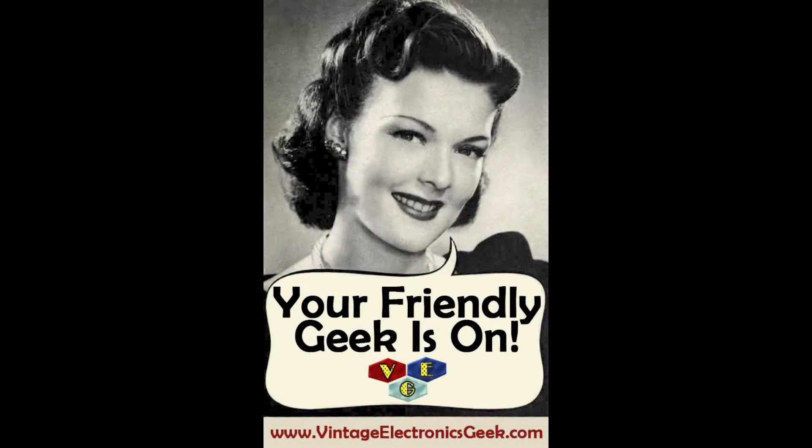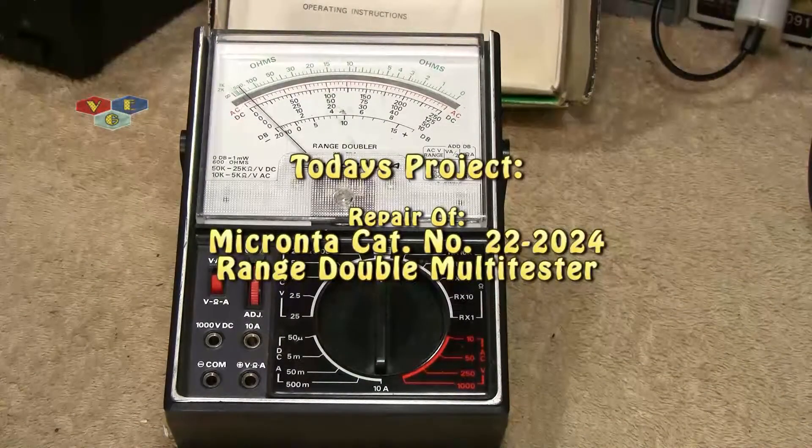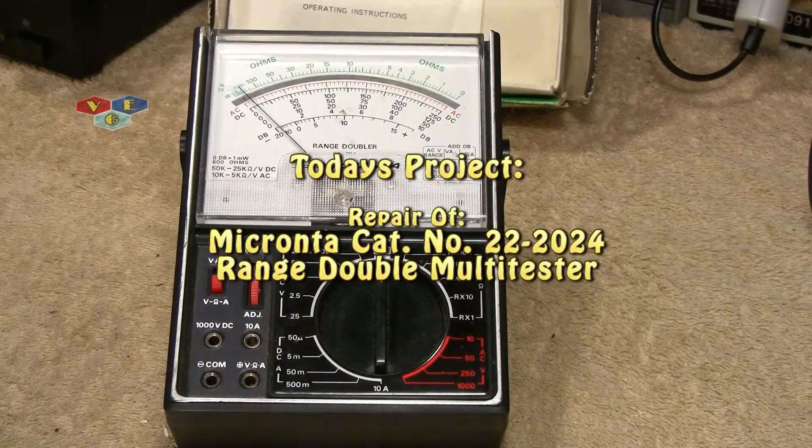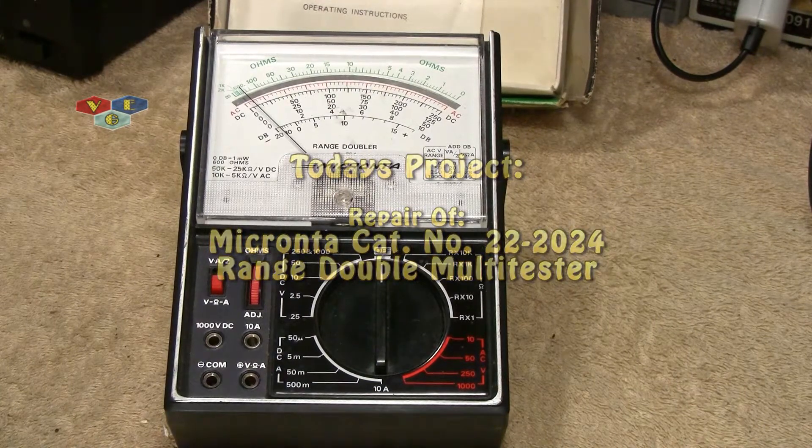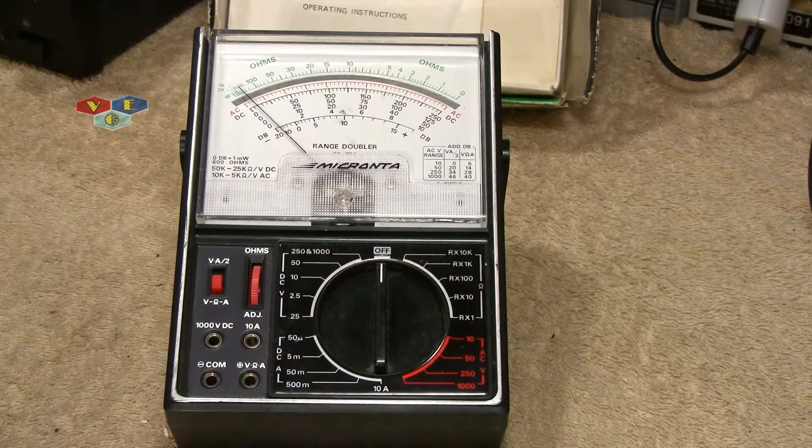Hello everybody and welcome to another video brought to you by me Jack Vintage Electronics Geek.com. Today's video is going to be about this Micronta catalog number 22-204 voltometer.